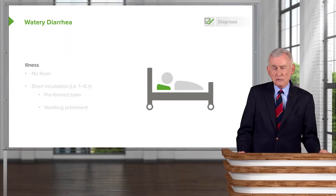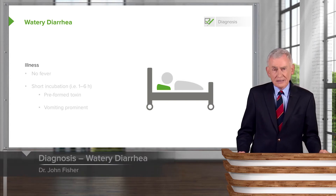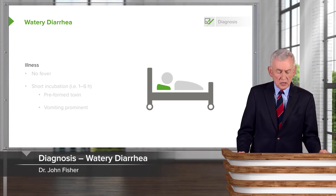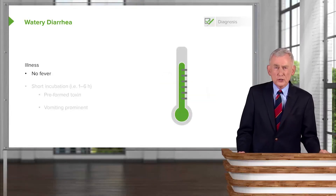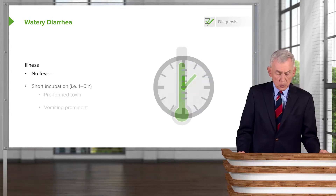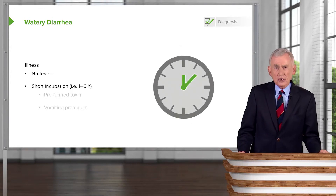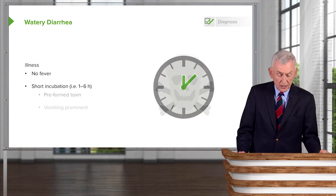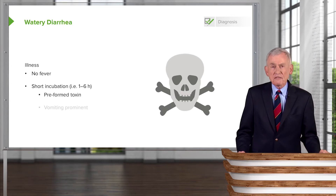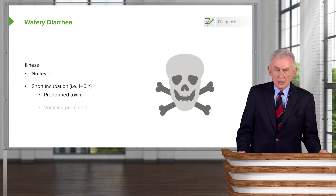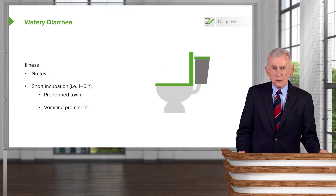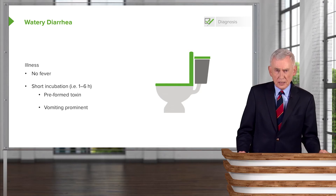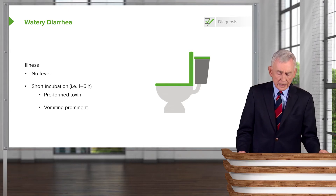Let's talk first about watery diarrhea and some of its characteristics. Patients who have most forms of watery diarrhea do not have fever. Ordinarily this is a disorder that has a short incubation — one to six hours — especially if there's preformed toxin present in the food. Vomiting is more prominent in that type of food poisoning, but watery diarrhea certainly can occur.